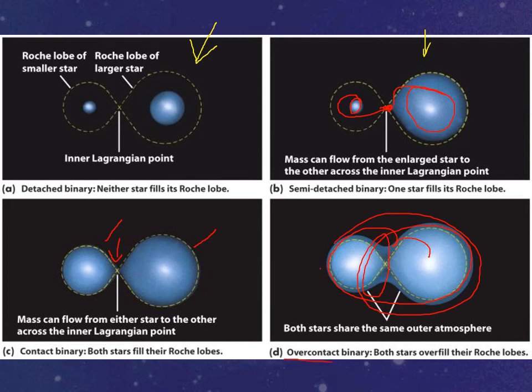So they actually share an outer atmosphere that surrounds both of them. The interesting thing about these things, other than detached, is that mass can go from the full Roche lobe to the other.